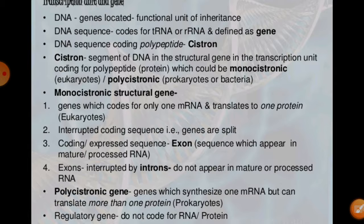In monocistronic, the genes which code only for messenger RNA translate to one protein in eukaryotes, and the interrupted coding sequences are split. The coding sequence is called an exon — the sequence which appears in the mature processed RNA. The introns do not appear in the mature processed RNA. Whenever RNA develops, the exons appear, and these exons are always interrupted by introns.